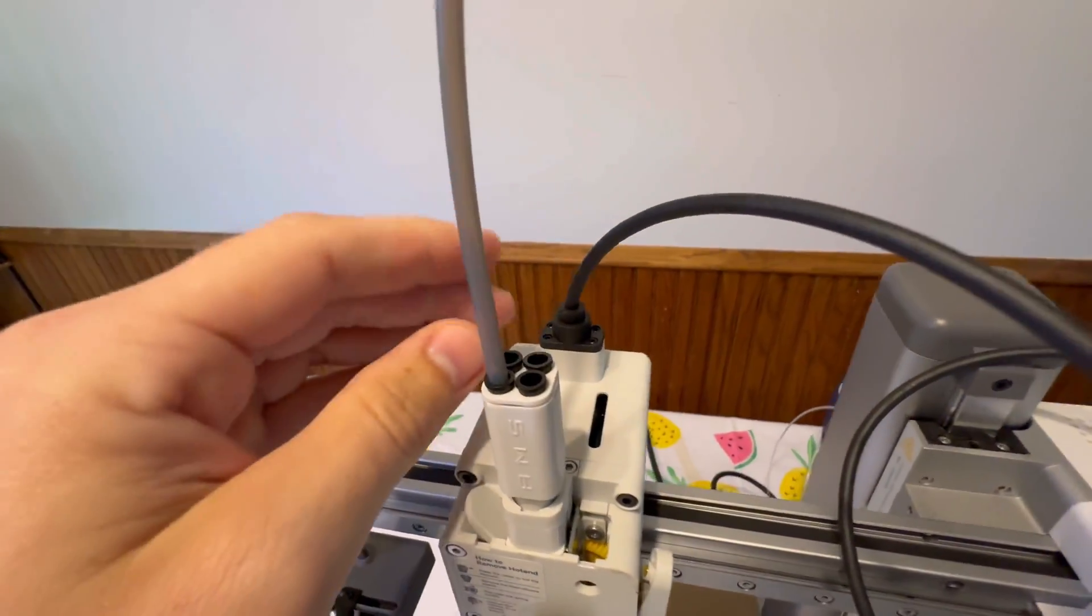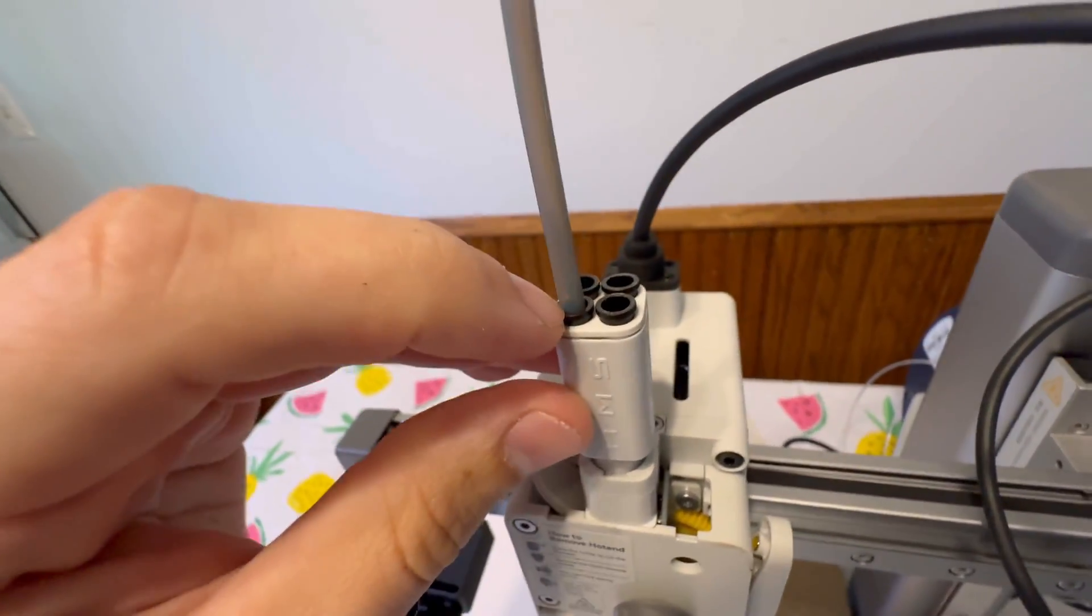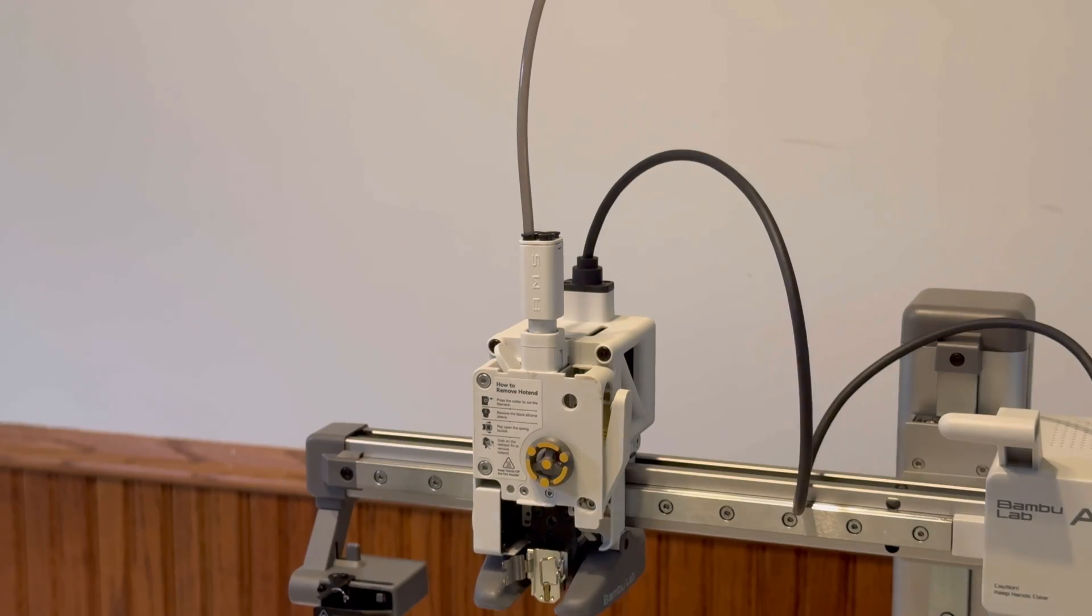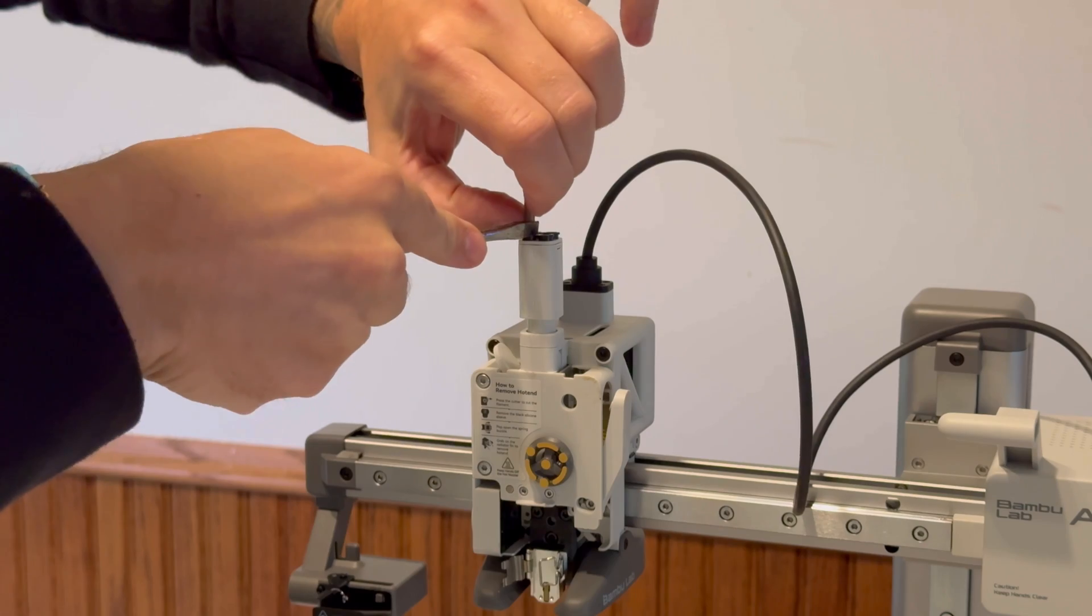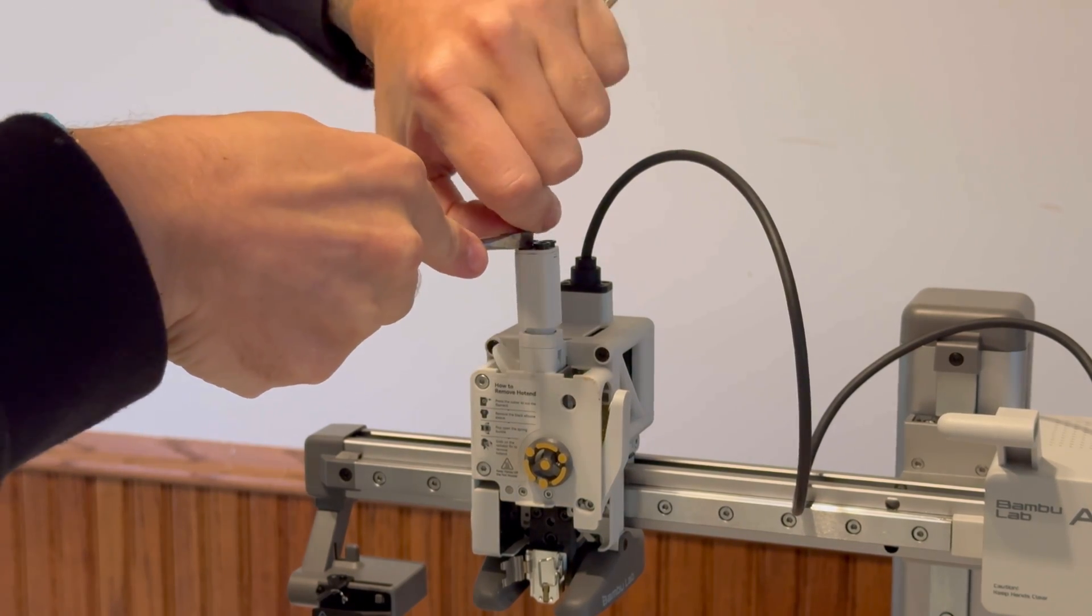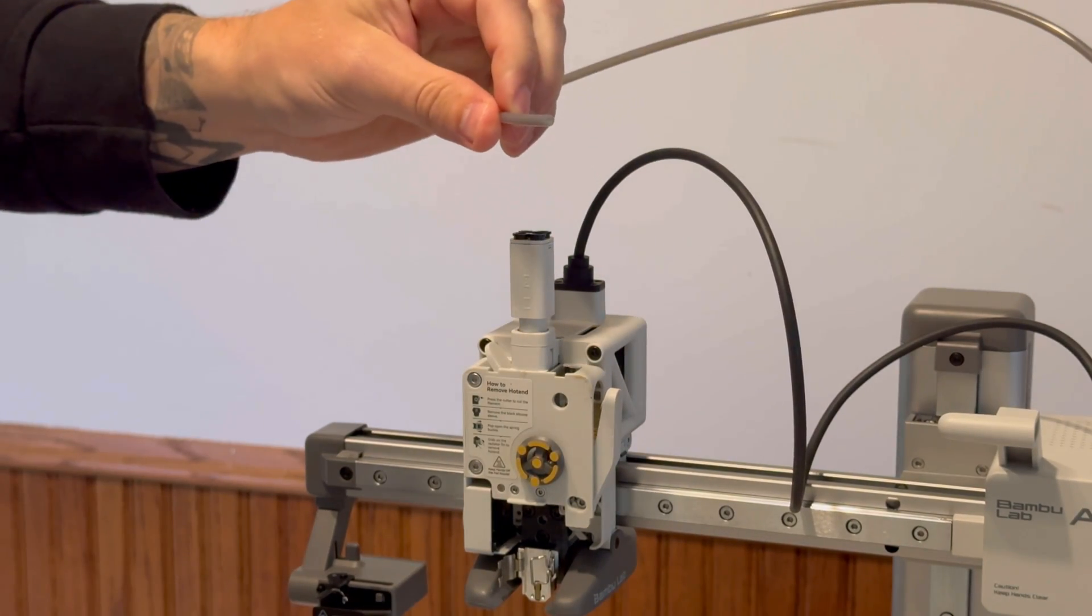So first what you need to do here is we need to remove this PTFE tube from this little insert right here. What you can do is use a tweezers or like a screwdriver. Just be very gentle. You don't want to wreck these just pull down on both sides of it and it should come right out.